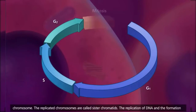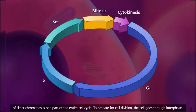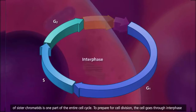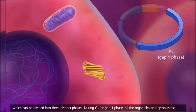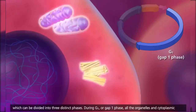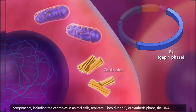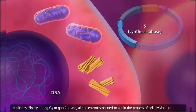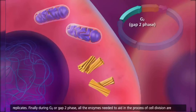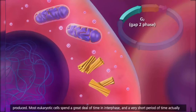The replication of DNA and the formation of sister chromatids is one part of the entire cell cycle. To prepare for cell division, the cell goes through interphase, which can be divided into three distinct phases. During G1 or Gap 1 phase, all the organelles and cytoplasmic components including the centrioles in animal cells replicate. Then during S or Synthesis phase, the DNA replicates. Finally, during G2 or Gap 2 phase, all the enzymes needed to aid in the process of cell division are produced.